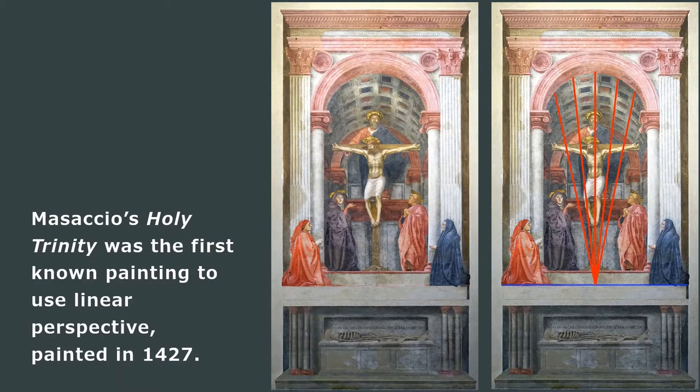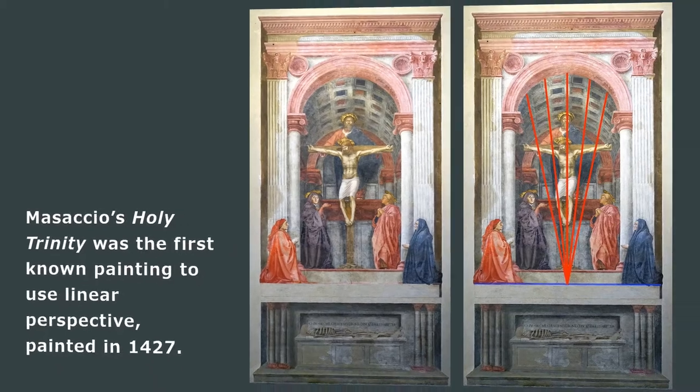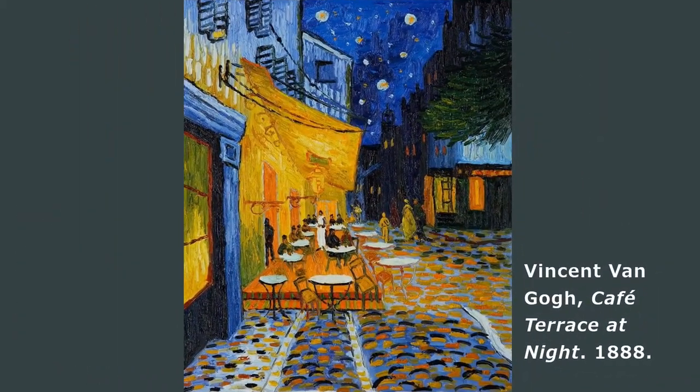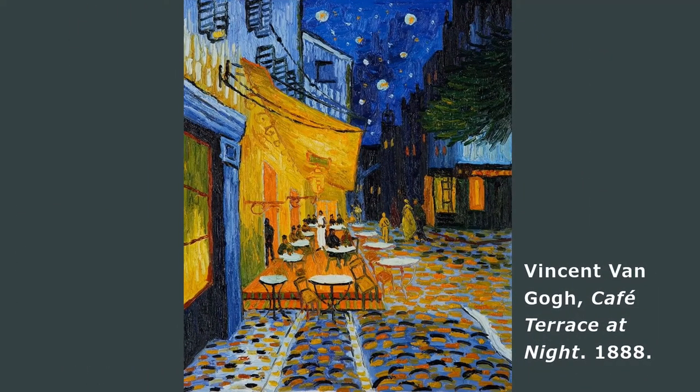Now, more recent artists also use linear perspective in their artwork. Here is an artist you have heard of before, Vincent van Gogh. And here's his painting called Cafe Terrace at Night, painted in 1888.